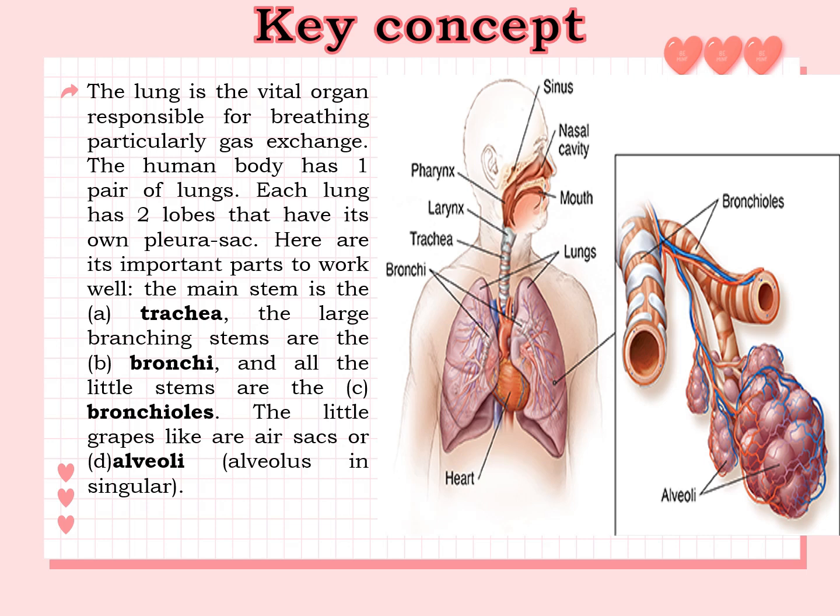The human body has one pair of lungs. Each lung has two lobes that have their own air sac. Here are its important parts: the main stem is the trachea, the large branching stems are the bronchi, all the little stems are the bronchioles, and the little grape-like structures are air sacs, or alveoli (alveolus in singular).